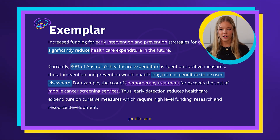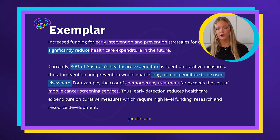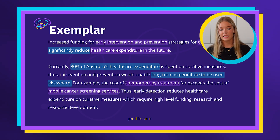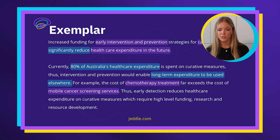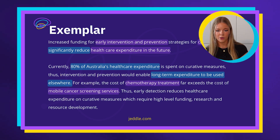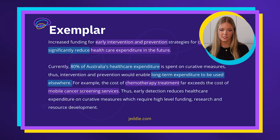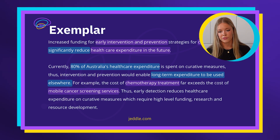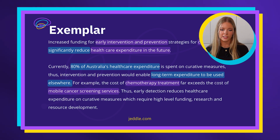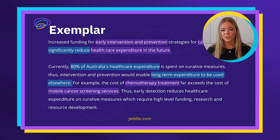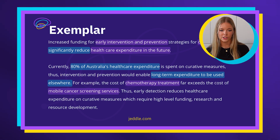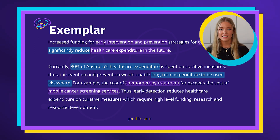Currently 80% of Australia's healthcare expenditure is spent on curative measures. Thus intervention and prevention would enable long-term expenditure to be used elsewhere. For example, the cost of chemotherapy treatment far exceeds the cost of mobile cancer screening services. Thus early detection reduces healthcare expenditure on curative measures which require high-level funding, research, and resource development.